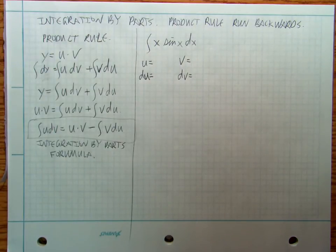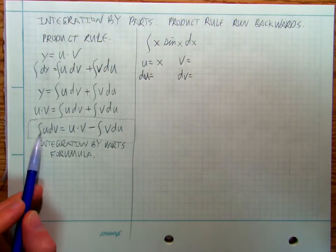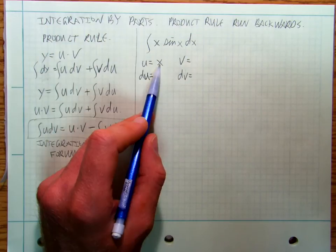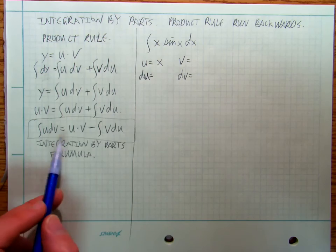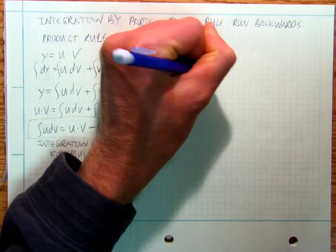So we're going to say that my u is x. So here I've got integral of u dv. So I'm going to say, well, this is going to be x and then dv is going to be the rest of it. So dv sin x dx.